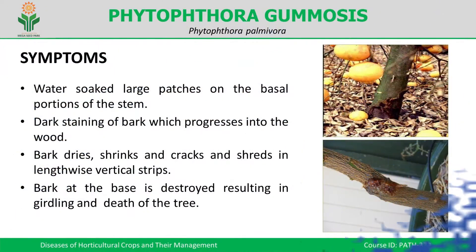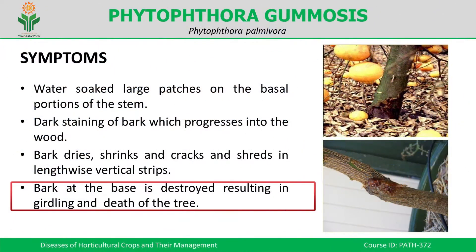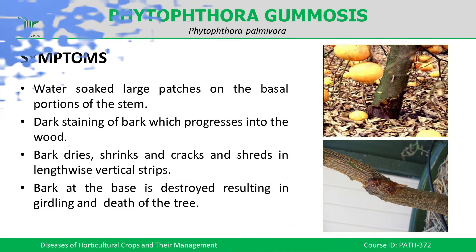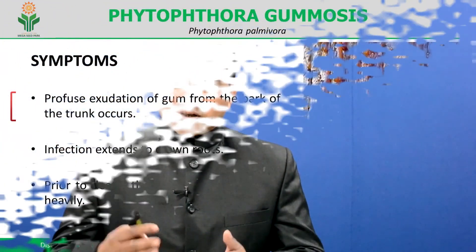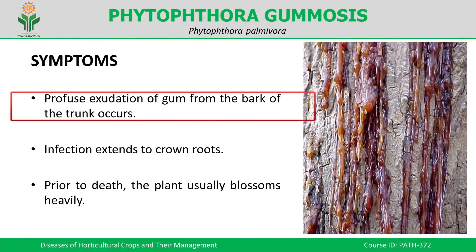Bark at the base will be destroyed, resulting in girdling or death of the tree. In addition, the fungus causes very profuse exudation of gum from the trunk. It should be remembered that this gum exudation occurs at the basal portion of the stem.